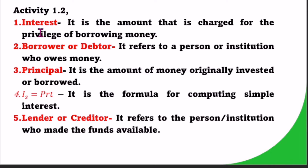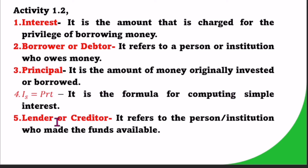Activity 1.2: Match the terms with their definitions. Number 1: Interest — it is the amount charged for the privilege of borrowing money. Number 2: Borrower or debtor — it refers to a person or institution who owes money. Number 3: Principal — it is the amount of money originally invested or borrowed. Number 4: I sub s equals P times R times T — it is the formula for computing simple interest. Number 5: Lender or creditor — it refers to the person or institution who made the funds available.